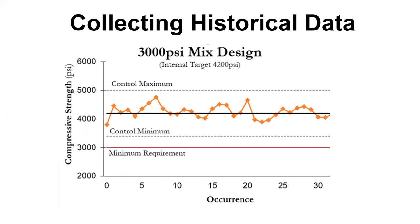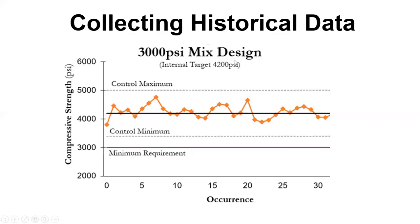For example, with a 4,200 psi control target and a minimum compressive strength of 3,000 psi, you set two standard deviations as your lower control limit so you don't get close to that minimum. That's what I have on trial batching, testing, and historical results — come back next time and we'll talk about concrete mixture design submittals. Have a great day.